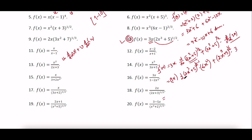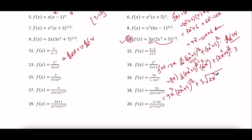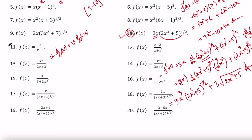Now you can cancel 2 and 6 to get 3, and 3 and 3 make 9. So 9x times x squared makes 9x cubed times (2x cubed plus 5) to the power negative one half, plus 3 times the square root of (2x cubed plus 5). This is the result.